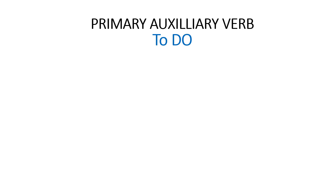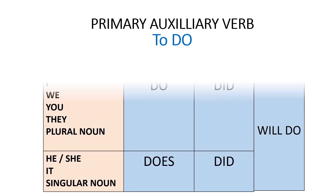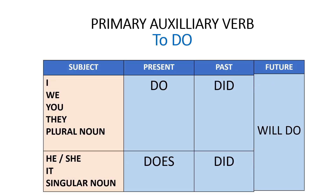Now, 'to do' verb forms — how are they used with different subjects? For I, we, you, they, and plural nouns: present tense uses 'do', past tense 'did', future tense 'will do'. For he, she, it, and singular nouns: present tense uses 'does', past tense 'did', future tense 'will do'.